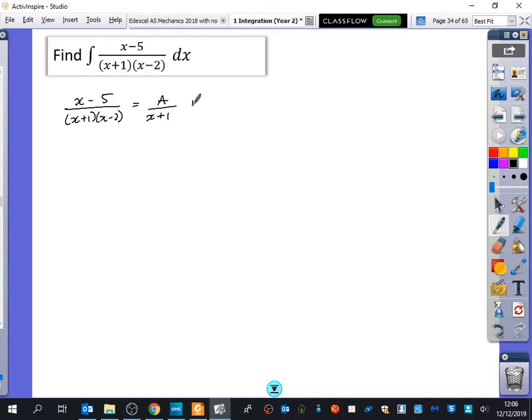So x minus 5 equals A(x minus 2) plus B(x plus 1). So x is equal to 2, so I get minus 3 equals 3B, so B is minus one. And if x is minus one, you get minus 6 equals minus 3A, so A is equal to two. Let's see how everyone's doing on that. Come on, get your partial fractions done for these, please. I've already done mine. You should have done them as quick as I have.